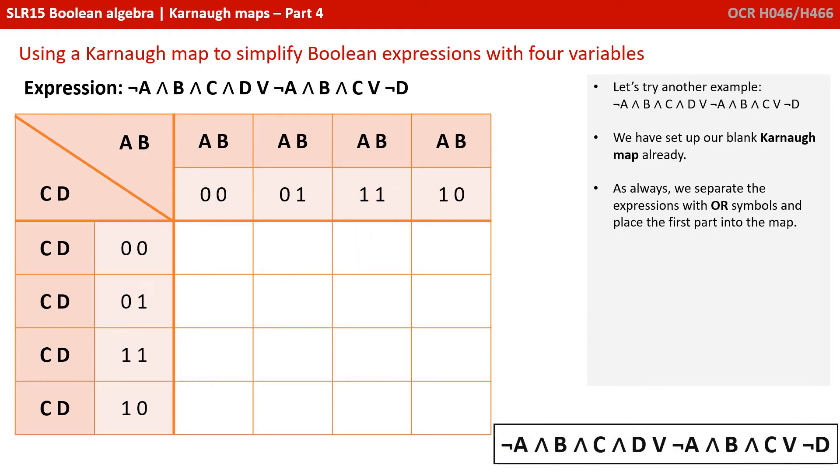Let's try another more complex example. Here we've got not A and B and C and D or not A and B and C or not D. So we've set up our blank Karnaugh map, and as always, we separate the expression with OR symbols.